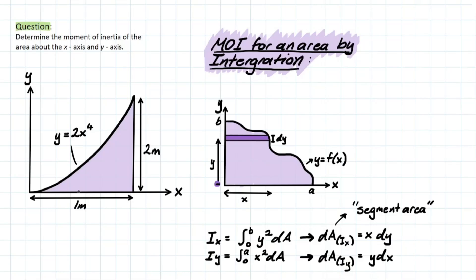Our problem is asking the same question, except it's represented by the function y = 2x⁴. If you haven't seen my previous composite video for moment of inertia, I suggest you watch that first. As mentioned, moment of inertia refers to an area's resistance to bending about a specific axis. In that composite video we used simple shapes with predetermined moment of inertia values, whereas integration lets us take a deep dive into the meaning behind those formulas and solve for moment of inertia when it's based on a function.